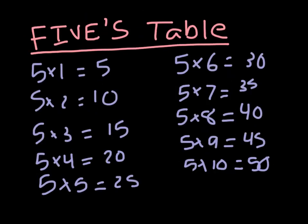Now let's go on to our fives table. It is: 5 times 1 is equal to 5, 5 times 2 is equal to 10, 5 times 3 is equal to 15, 5 times 4 is equal to 20, 5 times 5 is equal to 25, 5 times 6 is equal to 30, 5 times 7 is equal to 35, 5 times 8 is equal to 40, 5 times 9 is equal to 45, 5 times 10 is equal to 50.